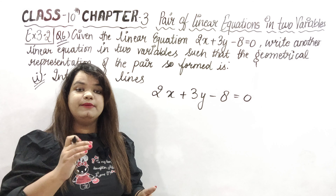The first equation a1x plus b1y plus c1 is equal to 0 has: a1 equals 2, b1 equals 3, and c1 equals minus 8. Now we need to make an equation a2x plus b2y plus c2 is equal to 0 such that the first two ratios are equal but the third is not. Take a2 as 2 — same. Take b2 as 3 — same, because we need to show them equal. But for c2, if c1 is minus 8, I'll take c2 as minus 6, or anything different.